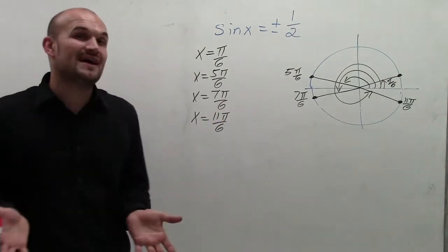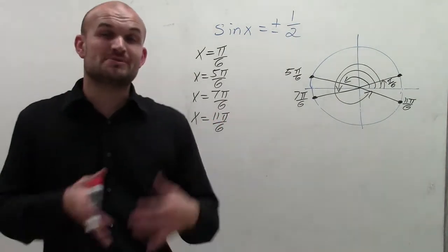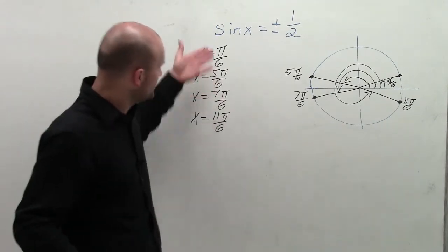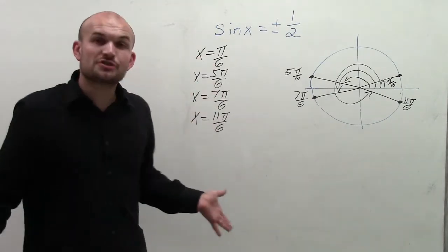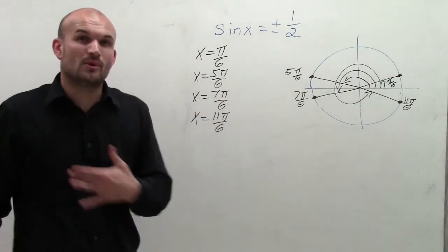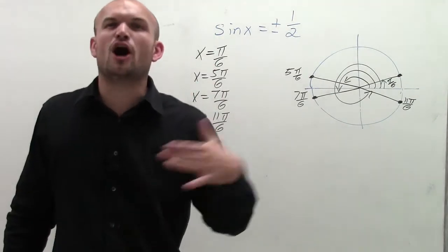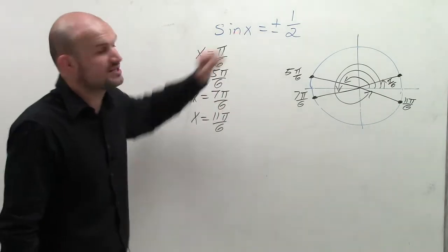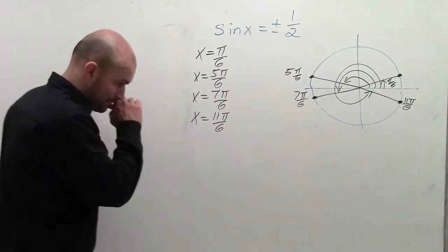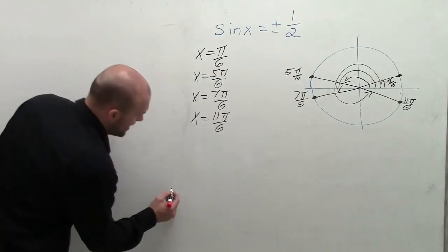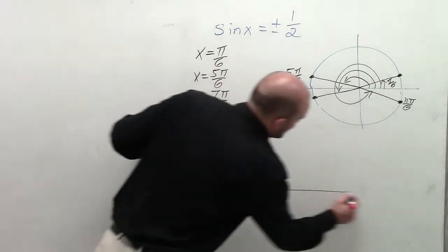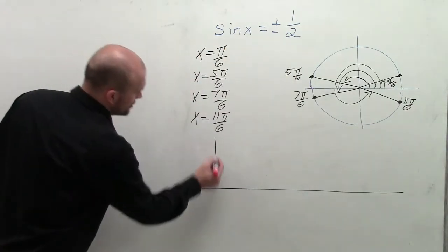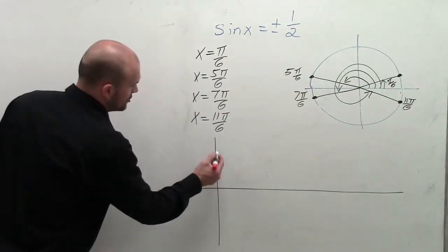So if I asked you to find all the solutions between 0 and 2π, those are your four solutions. But what if I said find all of the solutions for sine of x equals plus or minus 1/2? To do that, we're going to want to graph what the sine function looks like.